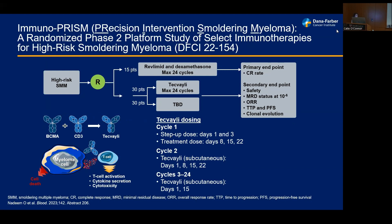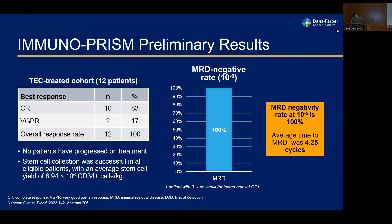Immunoprism is a phase two randomized study comparing standard of care — Revlimid and dexamethasone — to the bispecific antibody teclistamab, which recognizes BCMA on the cancer cell and engages the T cell of the immune system. By bringing the T cell close to the tumor cell, it activates the T cell and induces tumor killing. The dosing schedule is more spaced out than in active relapsed myeloma and is limited to two years. Out of patients treated, results show a 100% response rate and 100% MRD negativity to 10 to the negative six, achieved within nearly four months.